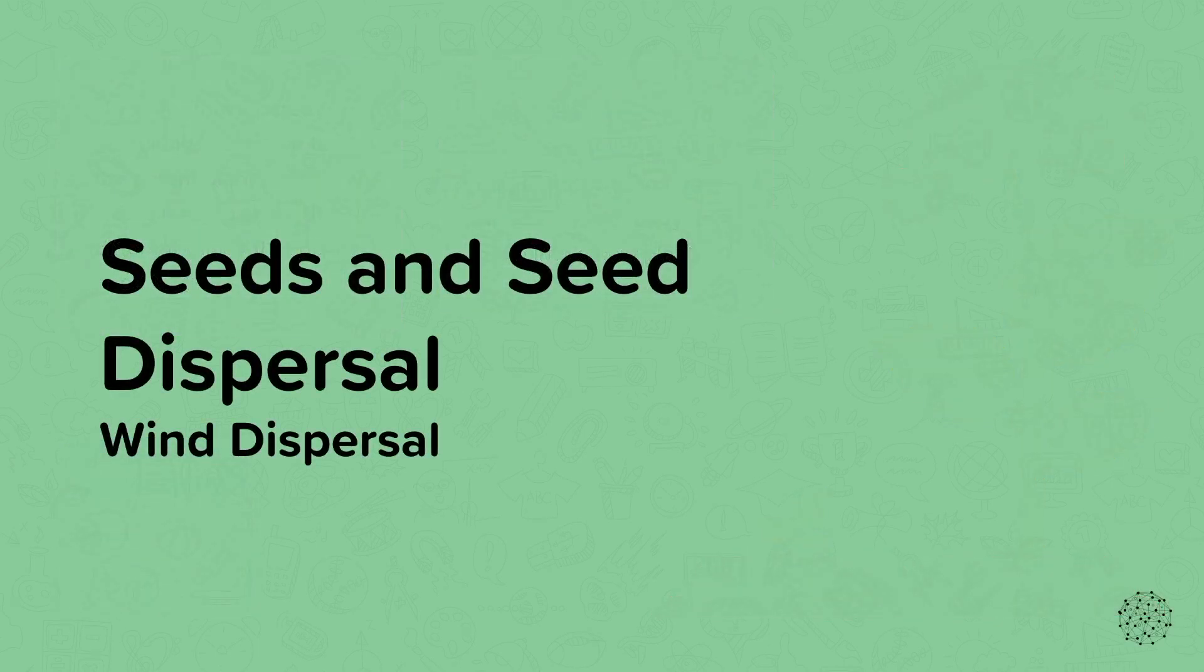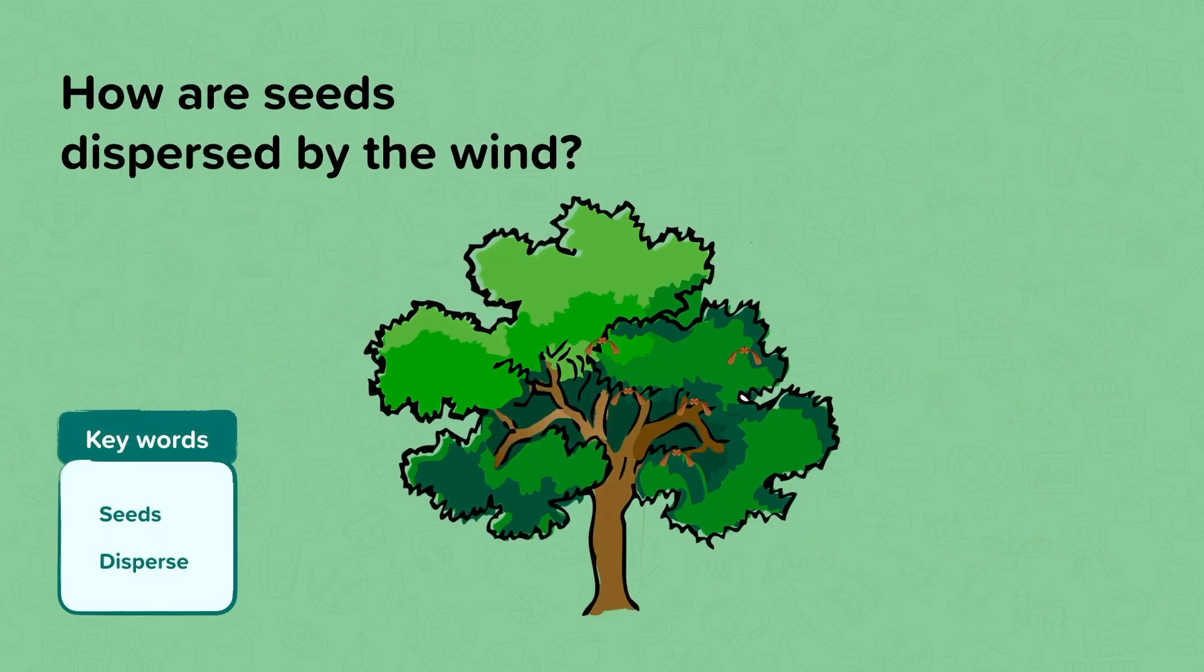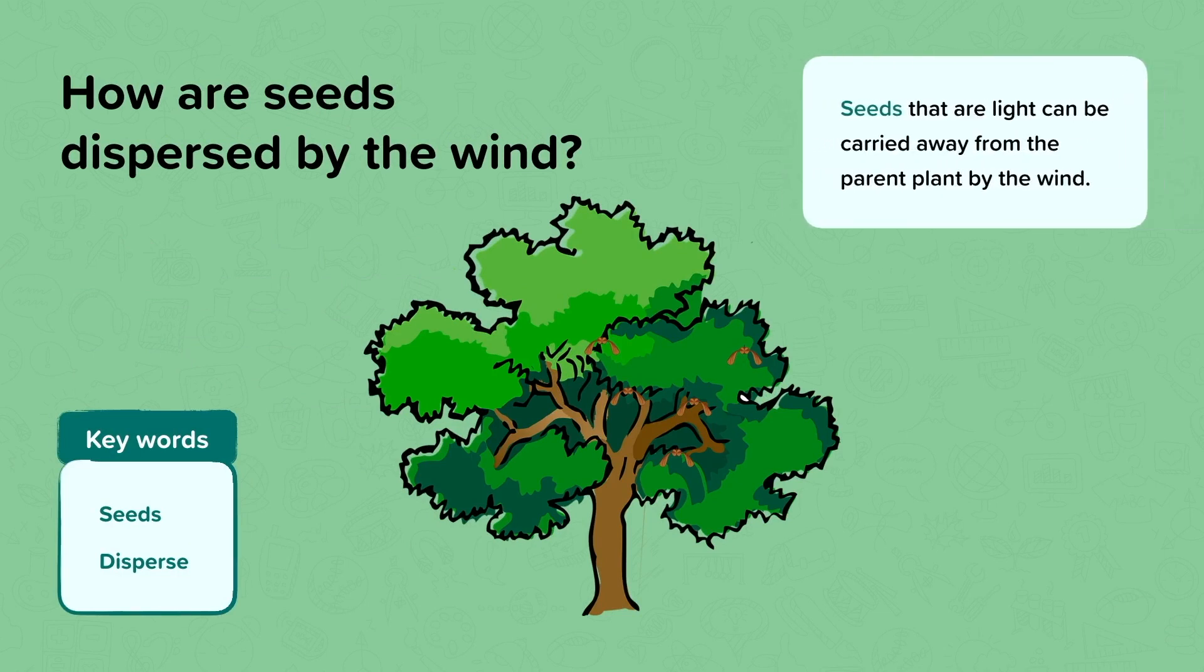Wind dispersal. Do you know some examples of plants that use wind to disperse their seeds? Seeds that are light can be carried away from the parent plant by the wind. A sycamore tree has special seeds that fly very well. Let's take a closer look at them.